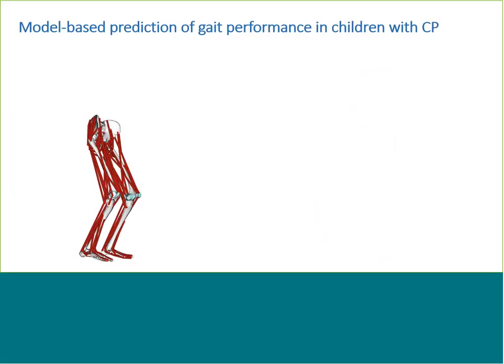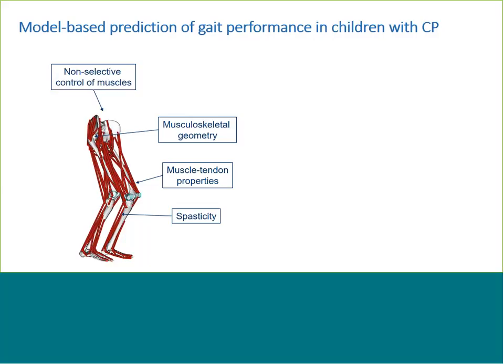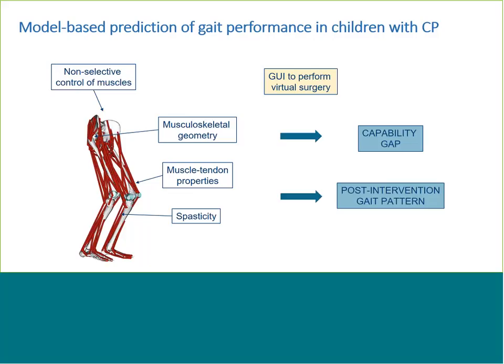The prediction of the postoperative gait performance needs to account for the motor control as well as musculoskeletal deficits of the child with CP. Therefore, we tailored the prediction platform to account for the musculoskeletal deformities, the altered musculoskeletal properties, and the presence of spasticity, as well as the non-selective muscle control. In the second part of the presentation, Friedel will present some of the newer developments we are currently integrating in the workflow.